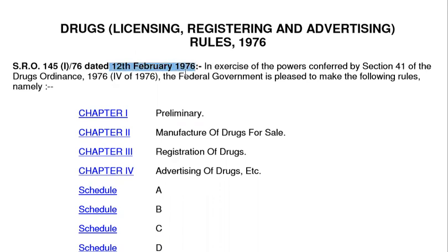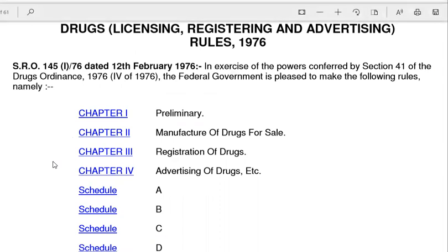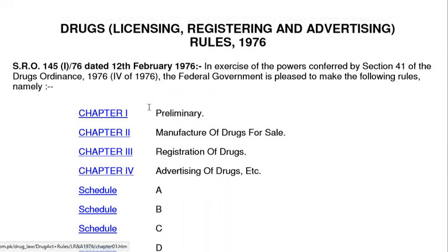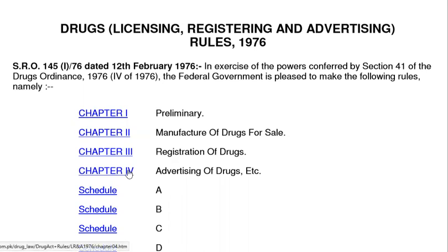This rule was empowered on February 12, 1976. In Chapter 2, we studied the definitions, manufacturing of drugs for sale, and registration of drugs. Now we will study the Advertisement of Drugs. Let's start Chapter 4.